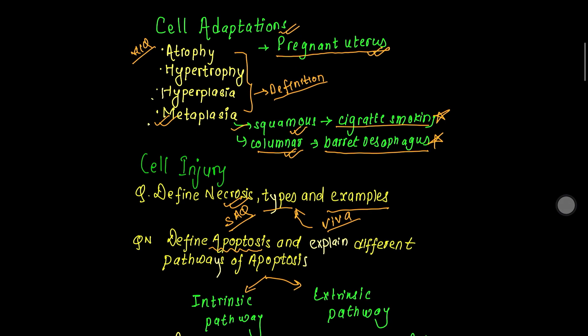First we are going to talk about cell adaptation. In cell adaptation we normally have the terms atrophy, hypertrophy, hyperplasia, and metaplasia.